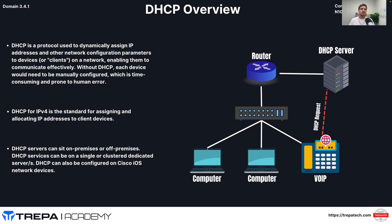DHCP for IPv4 specifically is the standard for assigning and allocating IP addressing to client devices. I made that IPv4 designation because in IPv6 we have SLAAC, the EUI-64 format, link-local addresses, and also DHCPv6. But when you talk to network engineers and system admins managing DHCP, most of the time we're talking IPv4.